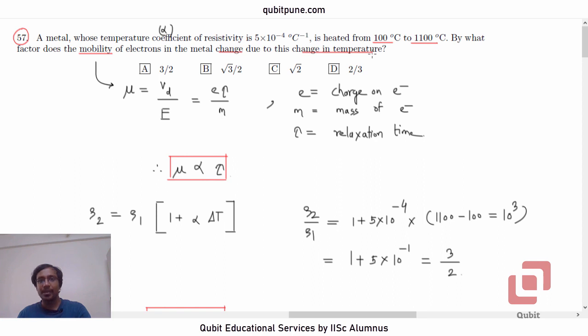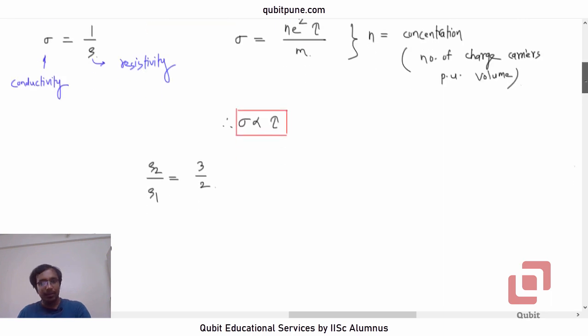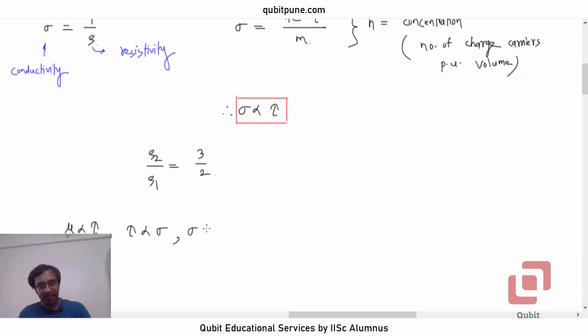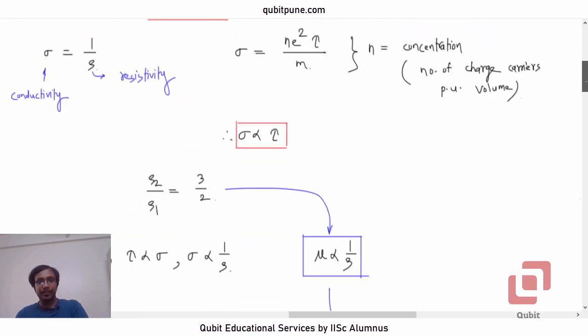Let us rewrite rho 2 by rho 1 as 3 by 2. And the mobility is proportional to relaxation time. After all, we want basically the change in the mobility. So, mu is directly proportional to tau. Then, tau is directly proportional to sigma and sigma is inversely proportional to rho. So, this tells us that mu will be inversely proportional to resistivity. So, if rho 2 by rho 1 is 3 by 2, what can we say about mu 2 by mu 1? This will actually be the reciprocal, so that will be 2 by 3. Mu 2 will be 2 by 3 times mu 1.